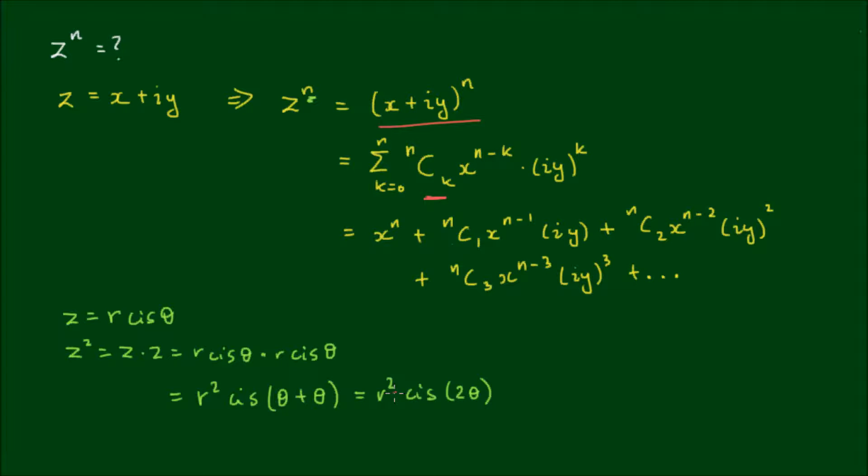So then this simplifies further to r squared cis 2 theta. So I can see a bit of a pattern here already. But just to be sure, let's go with z cubed. So z cubed I can write as z squared by z, which is equal to r squared cis 2 theta by r cis theta. And again, using the useful multiplication formula for polar coordinates, I would get r cubed cis 2 theta plus theta, which is equal to r cubed cis 3 theta.